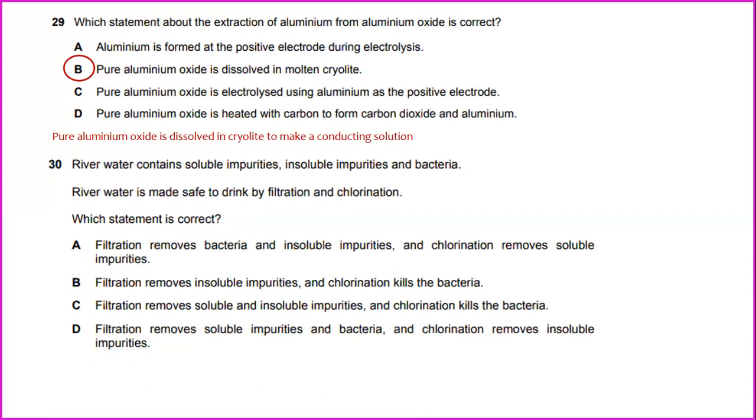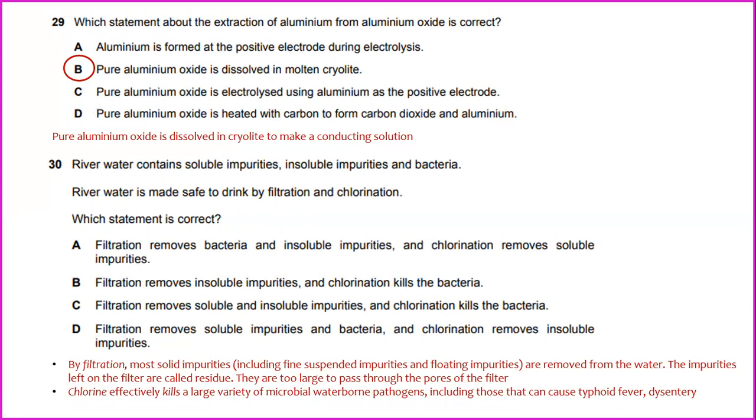The answer will be D. River water contains soluble impurities, insoluble impurities, and bacteria. River water is made safe to drink by filtration and chlorination. Which statement is correct? The answer will be D. By filtration, most solid impurities including fine suspended impurities and floating impurities are removed from the water. The impurities left on the filter are called residue. They are too large to pass through the pores of the filter. Meanwhile, chlorine effectively kills a large variety of microbial waterborne pathogens including those that can cause typhoid fever and dysentery. So the answer the most suitable will be D. Filtration removes insoluble impurities and chlorination kills the bacteria.